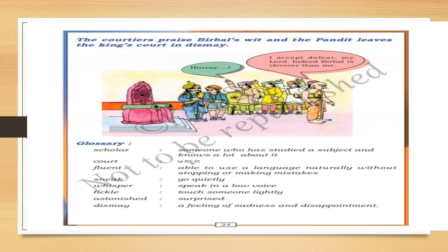Now let us go to the new words. Scholar means one who has studied a subject and knows a lot about it — a learned person. Court means the king's assembly hall where the king and ministers discuss their kingdom's affairs. Fluent means speaking a language naturally, without stopping and without making any mistakes. Sneaks means to go quietly. Whisper means to speak in a low voice. Tickle means to touch someone lightly. Astonished means surprised. Dismay means a feeling of sadness and disappointment.